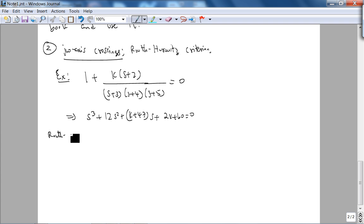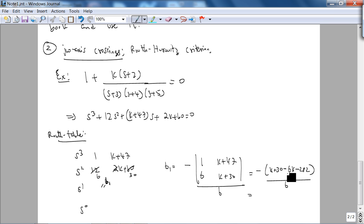So the Routh array: this is S³, S², S¹, S⁰. We have 1, 12, K+47, 2K+60. Now again, I can simplify this, divide by 2, that gives me a 6, this gives me a 30. So B₁ simply becomes, determined by 1, 6K+47-(K+30) over 6. This becomes -K+30-6K-282 over 6, so this will become -5K-252, so it will become 5K+252 over 6.